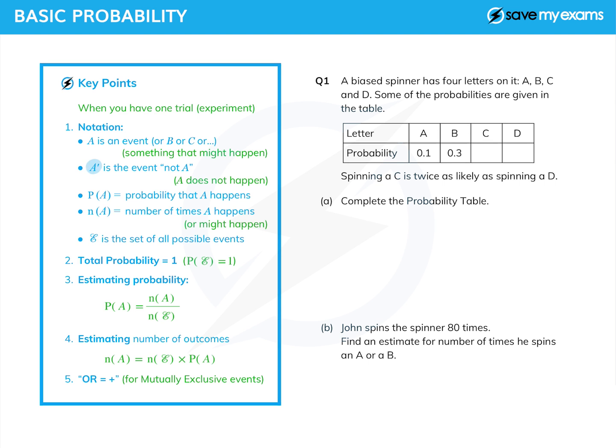Then if we put a dash next to the capital letter, that's not A, or not the event, in other words A does not happen. So if the event A was a head when you toss a coin, then the event not A would be a tail.